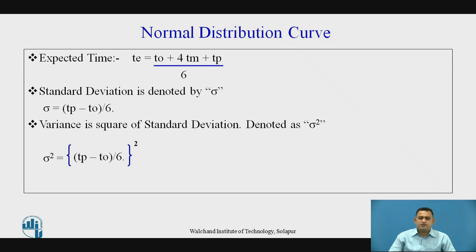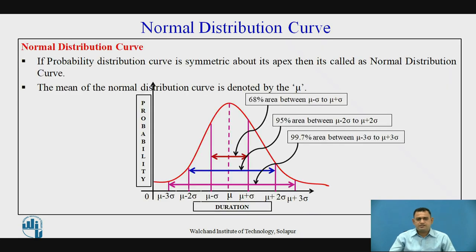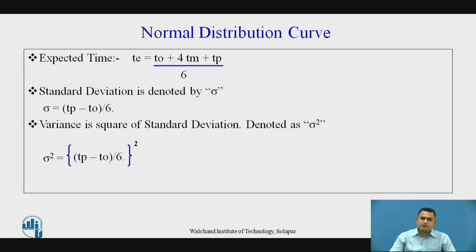The variance is the square of the standard deviation, denoted by sigma squared. The 6 in the denominator represents the range from mu minus three sigma to mu plus three sigma, that is one, two, three, four, five, six — the range from minus three sigma to plus three sigma. The coefficient 4 is given to the most likely time because most activities in the project are completed at the most likely time, so more weightage is given to it. The coefficient 1 is given to both optimistic and pessimistic time.